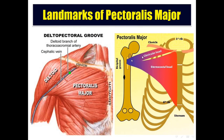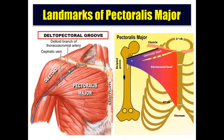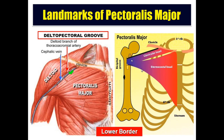The pectoralis major: the clavicular head arises from the clavicle; the sternocostal head arises from the sternum and costal cartilages. It is inserted into the lateral lip of the bicipital groove. Supplied by medial and lateral pectoral nerves. Action: adduction, flexion, and medial rotation of the arm. Regarding landmarks, it has an upper and lower border. The upper border is separated from the deltoid by the deltopectoral groove, which contains three structures: the deltoid branch of the thoracoacromial artery, the cephalic vein, and the infraclavicular lymph nodes. The lower border of pectoralis major forms the anterior axillary fold.